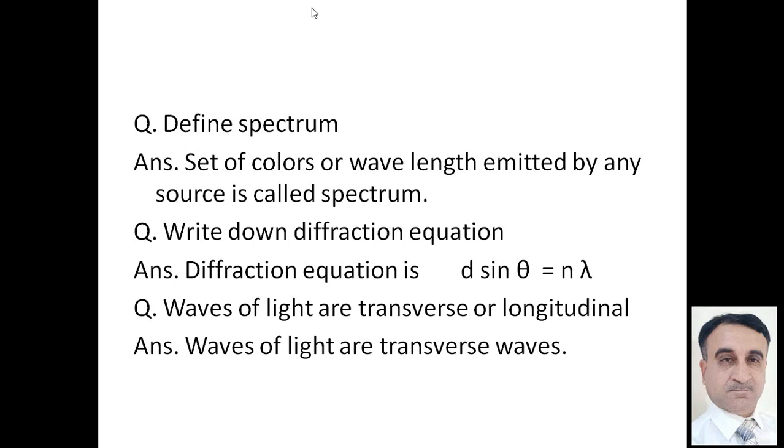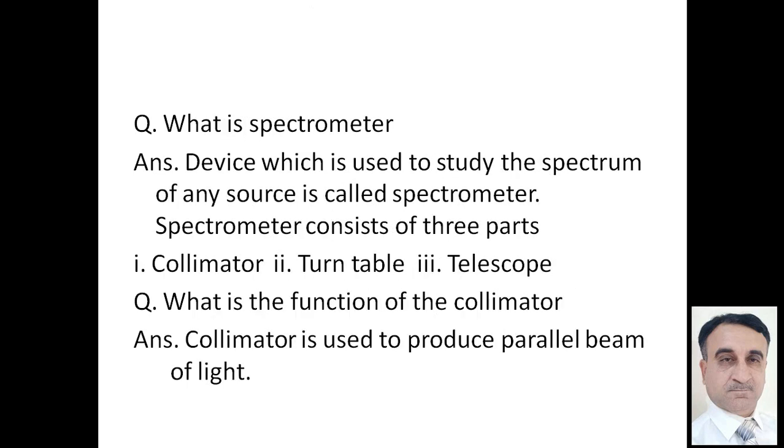Waves of light are transverse or longitudinal? Waves of light are transverse waves. Device which is used to study the spectrum of any source is called spectrometer. Spectrometer consists of three parts: collimator, turn table, and telescope. What is function of the collimator? Collimator is used to produce parallel beam of light.